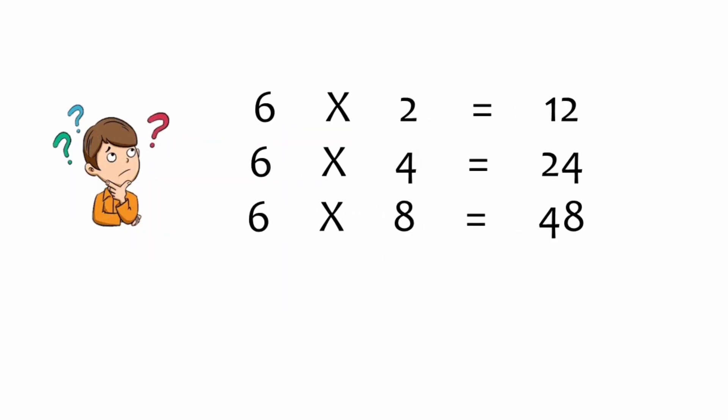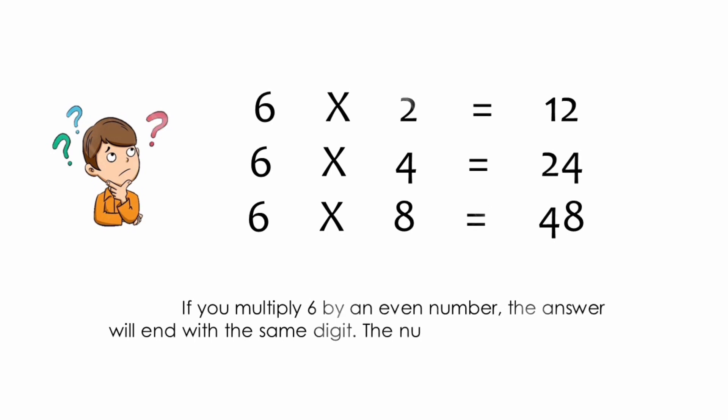Do you notice something? Right. If you multiply 6 by an even number, the answer will end with the same digit. The number will be half the number in the tens place.